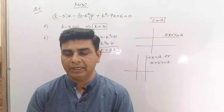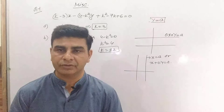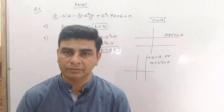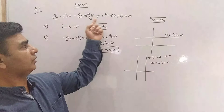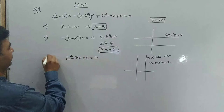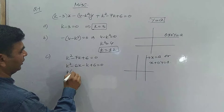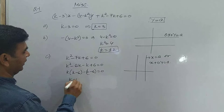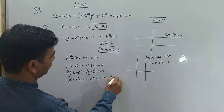The last part asks for the line passing through the origin. If the line passes through the origin, then point (0,0) satisfies the equation. Substituting x = 0 and y = 0, the remaining part gives k² - 7k + 6 = 0. Factoring: k² - 6k - k + 6 = 0, giving (k-1)(k-6) = 0. Therefore k = 1 or k = 6.